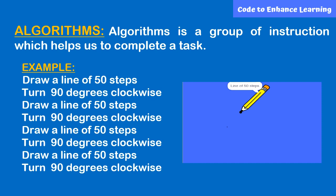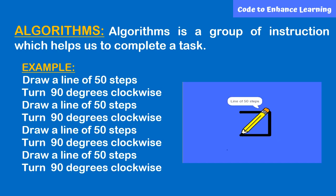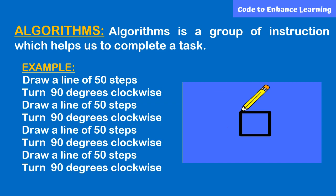Draw a line of 50 steps, then turn 90 degrees clockwise. Again, draw a line of 50 steps and turn 90 degrees clockwise. We will follow this up to 4 times in order to make a square. A recipe to make your favorite dish is also an algorithm, as it tells you a group of steps to complete a task — i.e., make a dish. Thus, algorithms are present in many places around us.